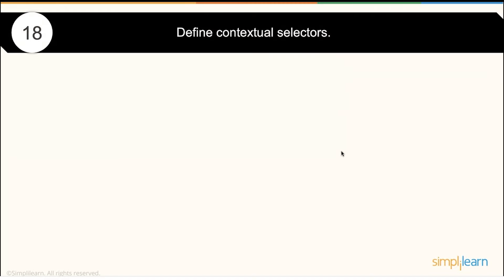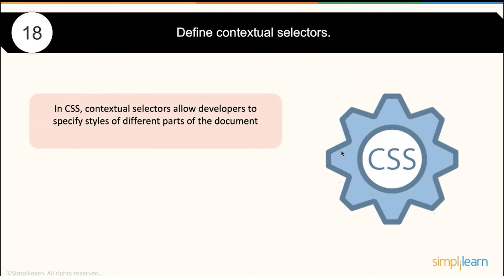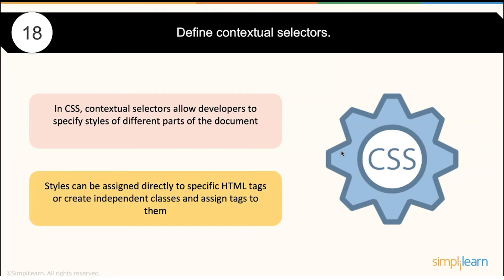Define contextual selector. In CSS, contextual selectors allow the developer to specify the style of a different part of the document. The style you utilize can be aligned directly to static HTML pages to create independent classes — that is called a contextual selector.